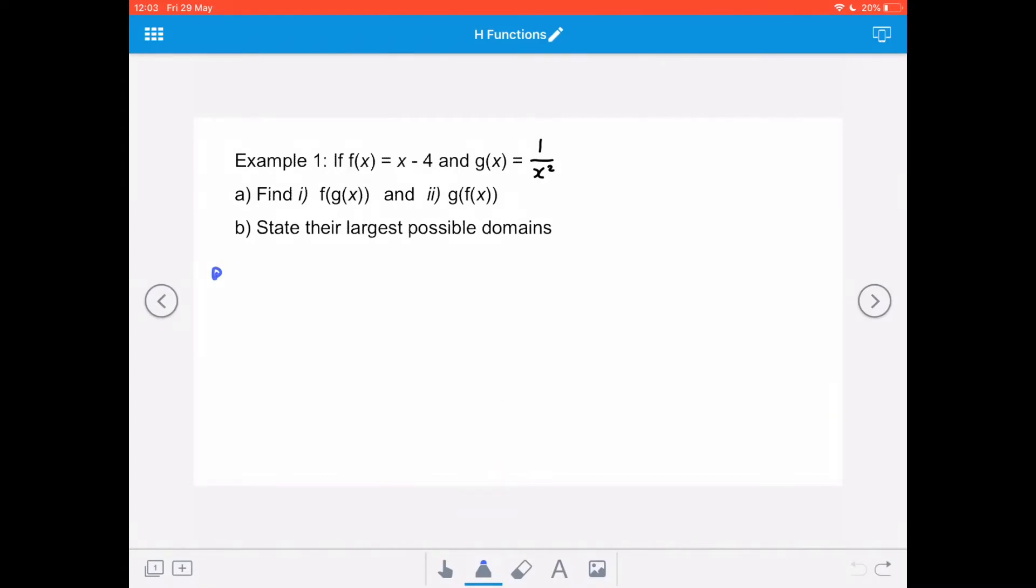So for part a, first of all, I need to consider what f of x equals. So f of x equals x minus 4. So f of g of x means that I'm going to replace all of the x values with g of x. So I'm going to replace that x with g of x minus 4. Now my g of x is 1 over x squared. So that means that I've got 1 over x squared, take away 4 is my f of g of x.